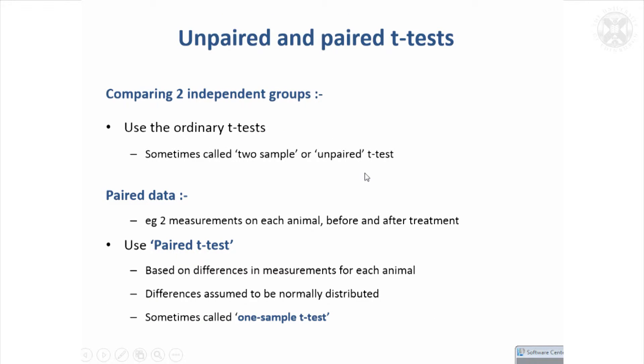We've looked at the ordinary T test so far, and that's for two independent groups of data. Sometimes that gets called an unpaired T test or a two sample T test. That's the most common T test, but occasionally you're in the situation where your data are paired in some way.